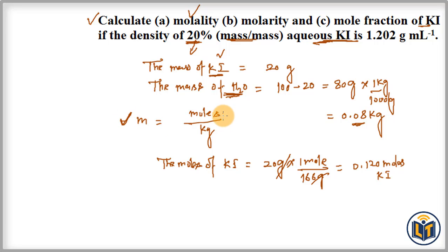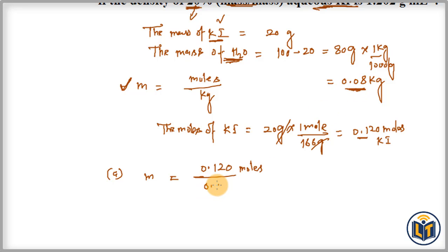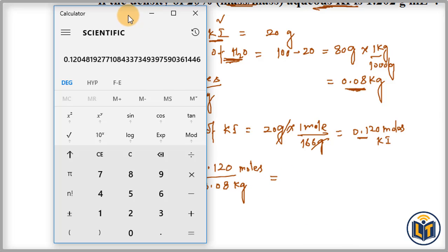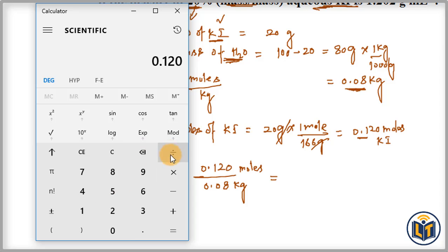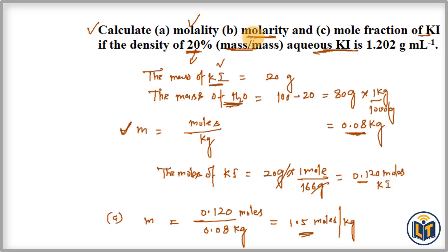Now we apply the molality formula. Molality equals moles of solute (0.120 mol) divided by mass of solvent in kg (0.08 kg). Dividing 0.120 by 0.08 gives us 1.5 mol/kg. This is the molality of the solution.